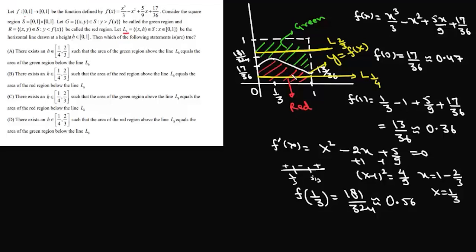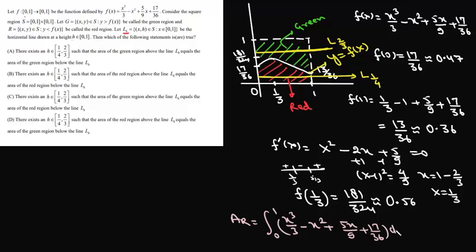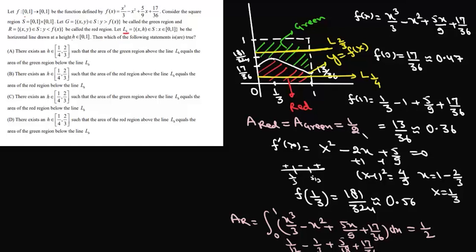So the horizontal line L(h) can range between L(1/4) and L(2/3). Before solving the options, we find the areas of the red and green regions. Area of red region = ∫₀¹ f(x) dx = [x⁴/12 - x³/3 + 5x²/18 + 17x/36] from 0 to 1 = 1/12 - 1/3 + 5/18 + 17/36 = 1/2. So the area of the red region equals the area of the green region, and both equal 1/2.